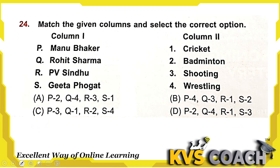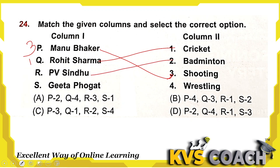Next: match the given columns — column 1 has player names and column 2 has sport names. Manu Bhaker belongs to shooting — P3. Rohit Sharma belongs to cricket — Q1. PV Sindhu is a badminton player — R2. Geeta Phogat is a wrestler — S4. So P3, Q1, R2, S4 — option C is the right answer here.